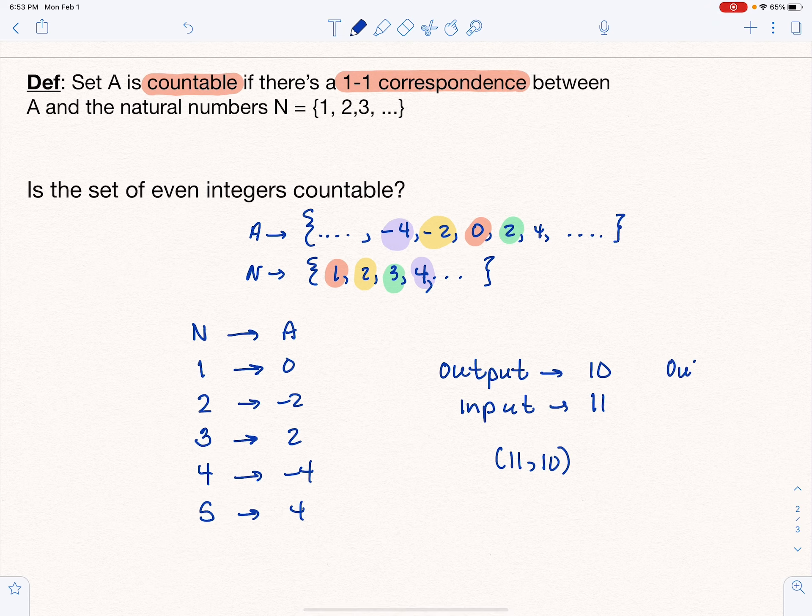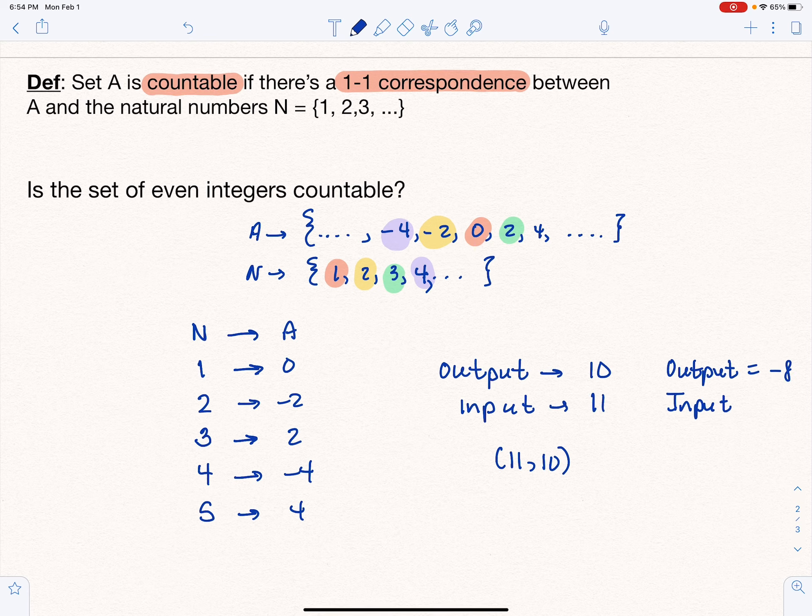If you wanted your output to be, say, seven - well, there isn't going to be a seven for an output. Let's say we wanted negative eight. Well, negative eight would have been, let's see. Two goes to negative two, four goes to negative four. It looks like input eight goes to negative eight.